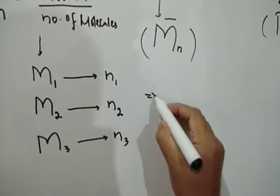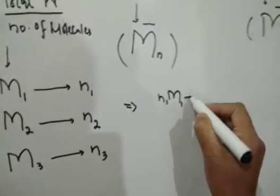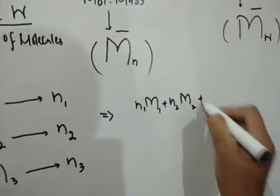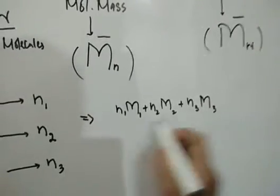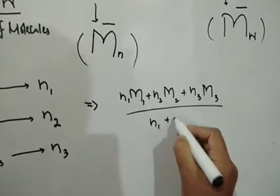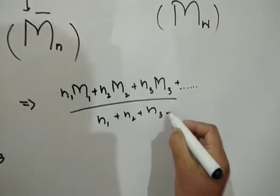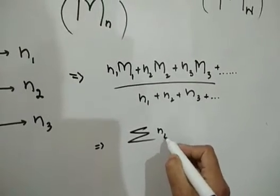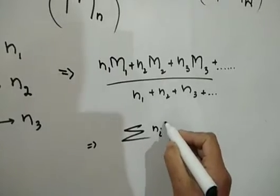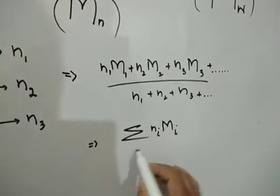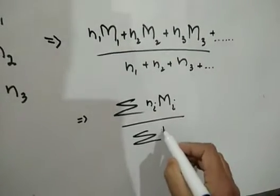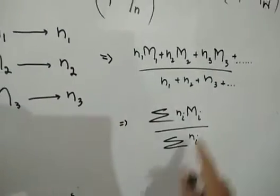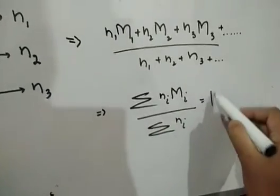We write it as: (N1·M1 + N2·M2 + N3·M3) divided by the total number of molecules (N1 + N2 + N3). If there are more, we continue adding N4, N5, and so on. In summation notation, this is written as: M̄n = Σ(Ni·Mi) / Σ(Ni). This is the number average molecular mass of a polymer.